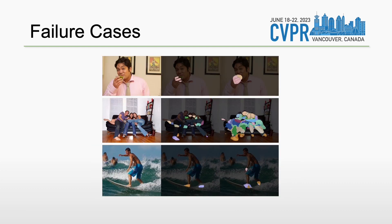Some typical failure cases of our detector are shown here. Our model might struggle with occlusions, multiple persons, or fine-grained contact areas. These point out that contact detection may benefit from adding human pose information, multi-resolution reasoning, and differentiating human-object contact from self-contact and person-person contact.